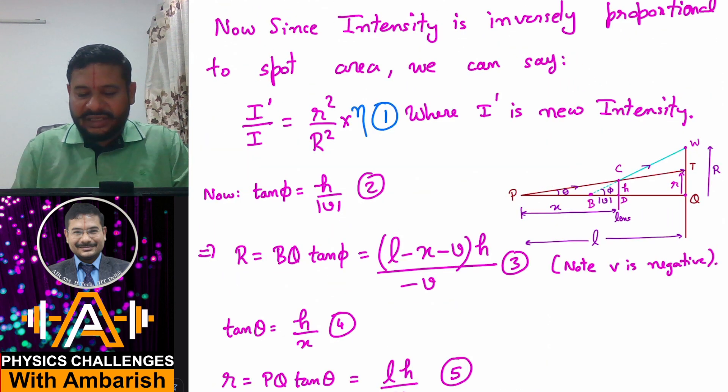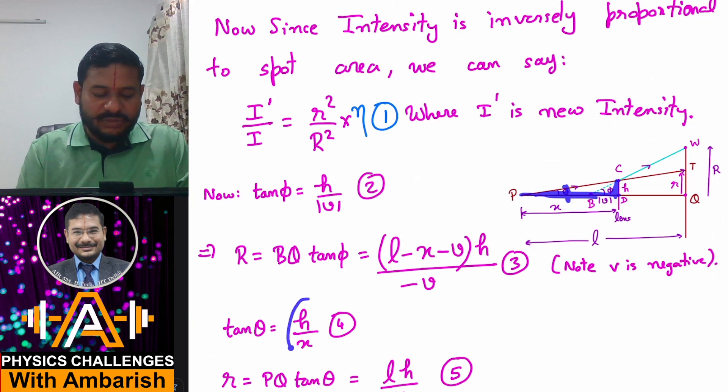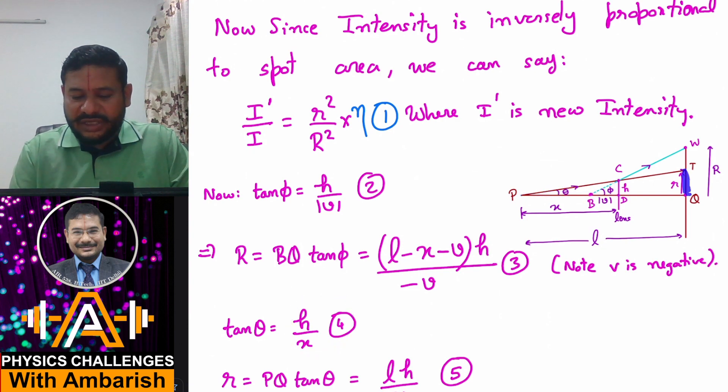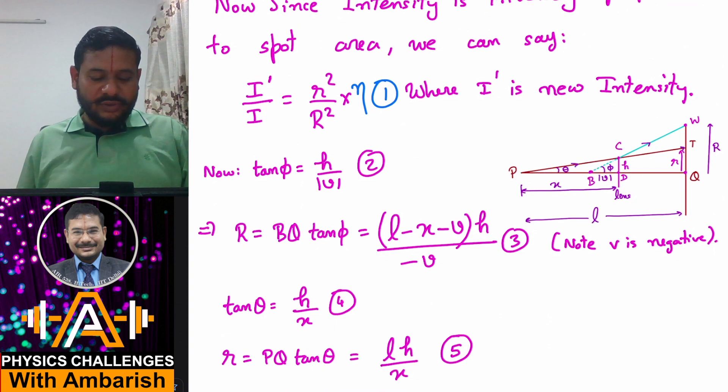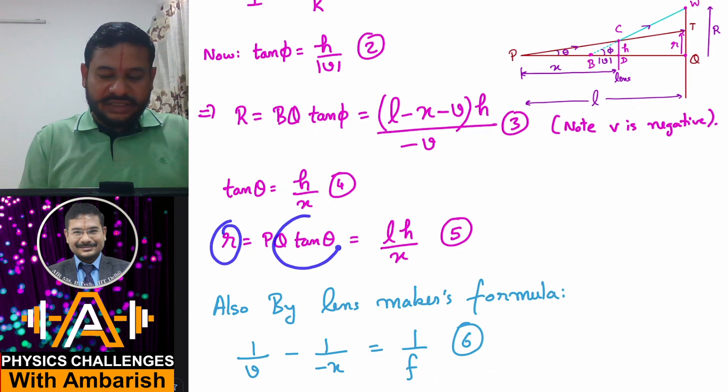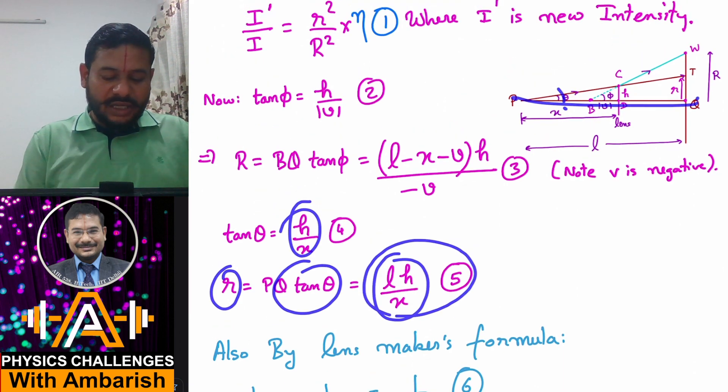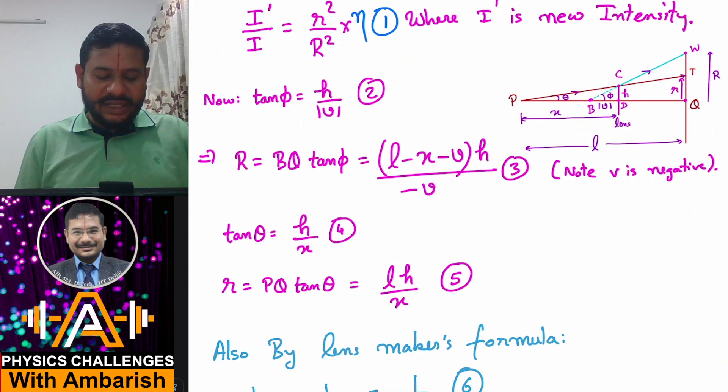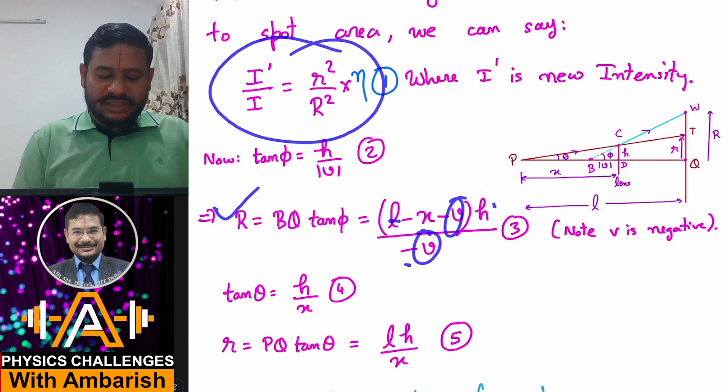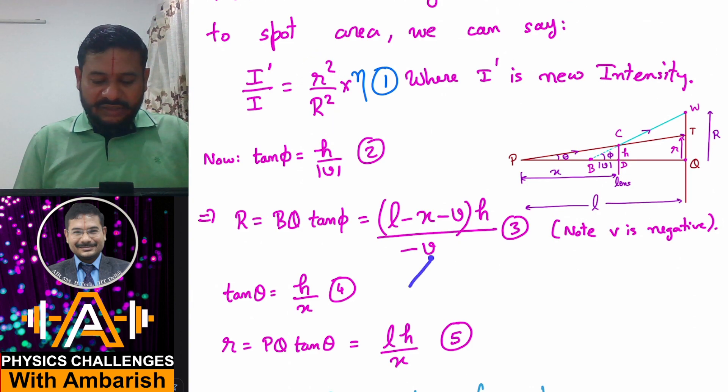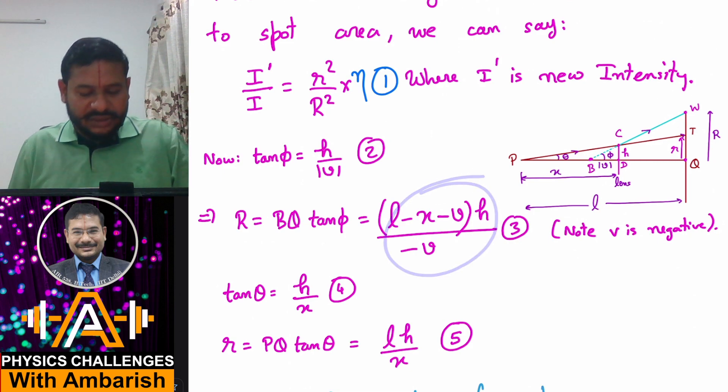And what about tan theta? This is H and this distance is X, so tan theta is simply H by X. What about the initial radius? Initial radius is nothing but L tan theta. This is L and the vertical is L tan theta. So small r is PQ tan theta, which is L into H by X. I have small r in terms of other variables L, H and X, and I have capital R in terms of L, H, X and small V. I know the intensity ratio, I just need to find small V and substitute for r² by R² by appropriately finding the value of V and putting in equation 3.